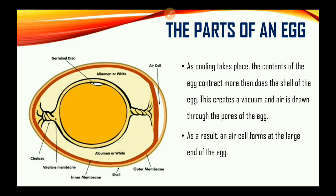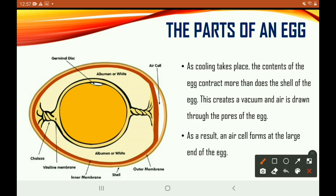As cooling takes place, the contents of the egg contract more than the shell does. This creates a vacuum and air is drawn through the pores of the egg. As a result, an air cell forms at the large end of the egg, and as you can see, this is what the air cell looks like.